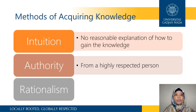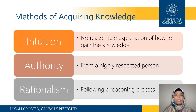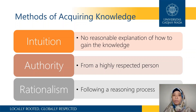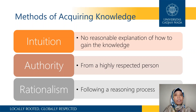The third method is rationalism. This is knowledge that we gain by following a certain reasoning or thought process. Many of the big philosophers were actually using rationalism — they were thinking about something very deeply to explain a phenomenon.